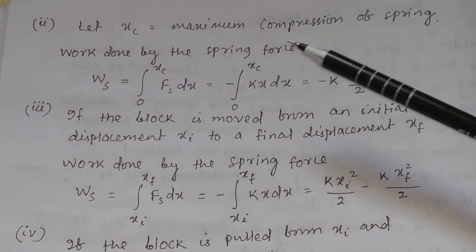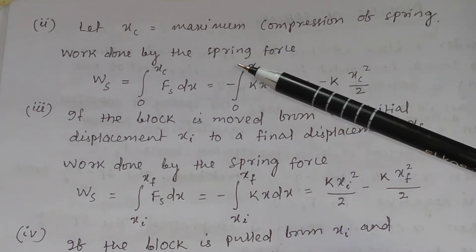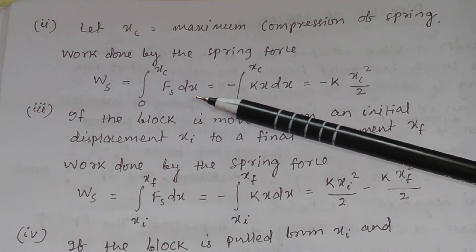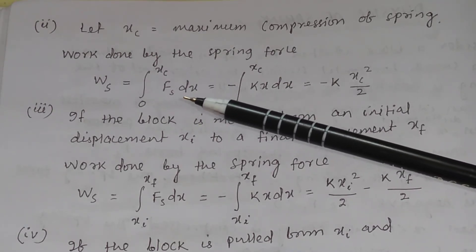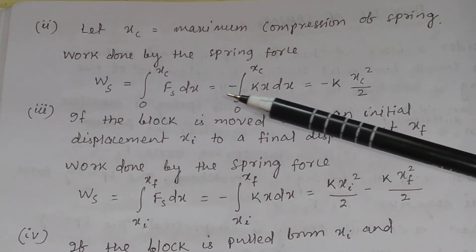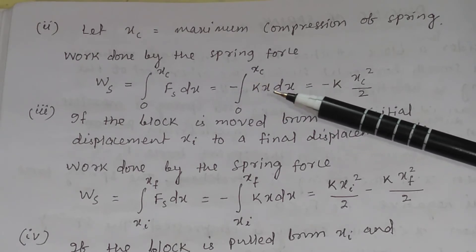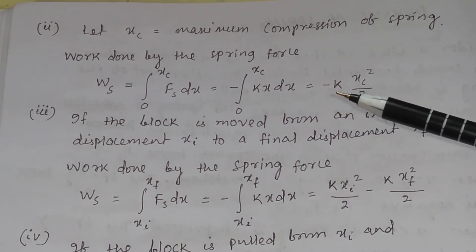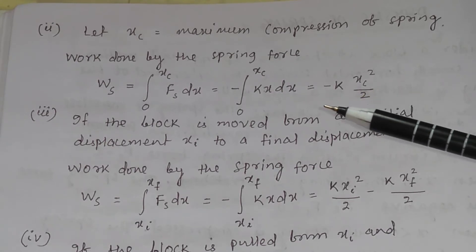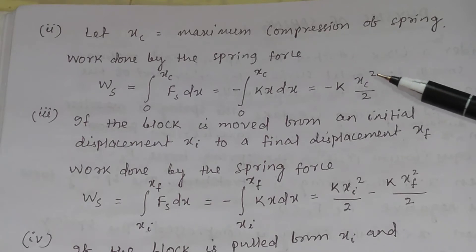Suppose xc is the maximum compression of the spring. The work done by the spring force is Ws = integral of fs dx from 0 to xc. Substituting fs = -kx, this gives -½kxc². So in the case of compression also, the work done by the spring force is negative.